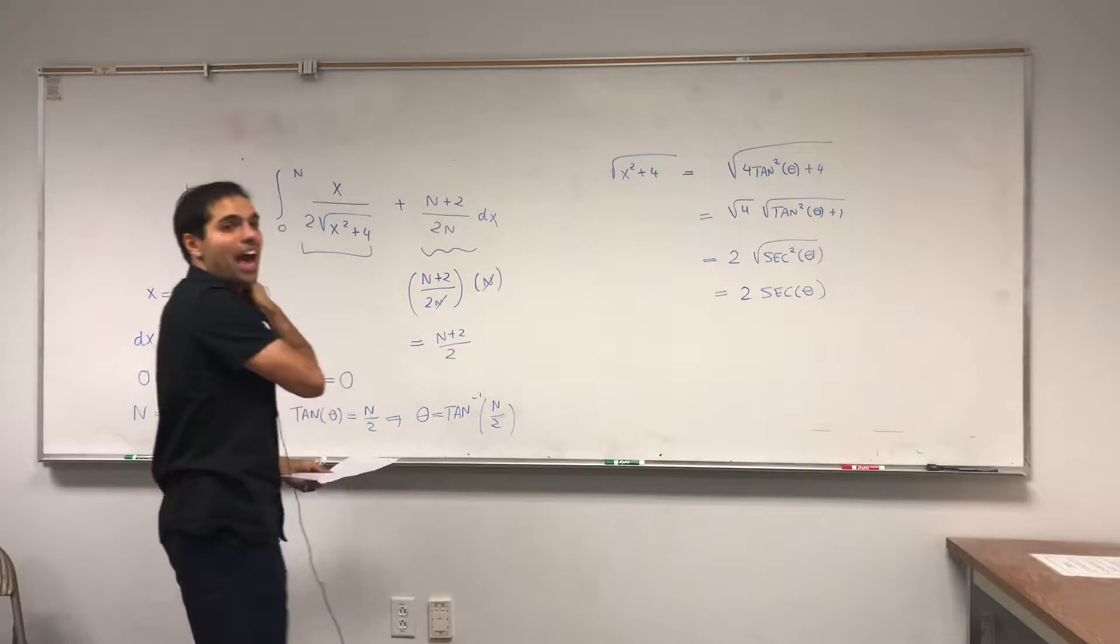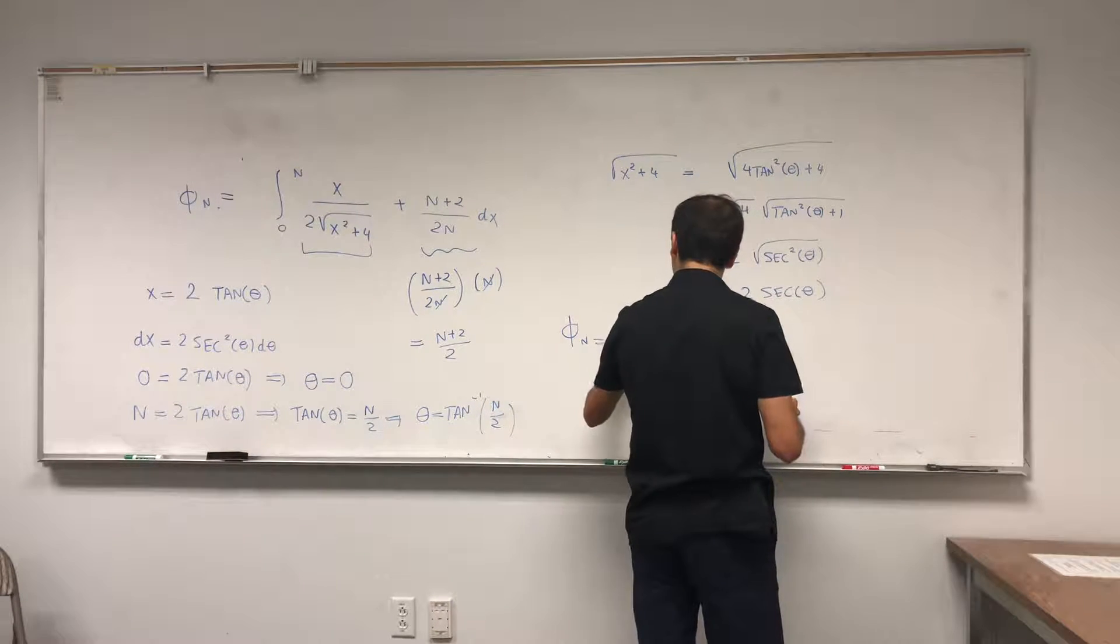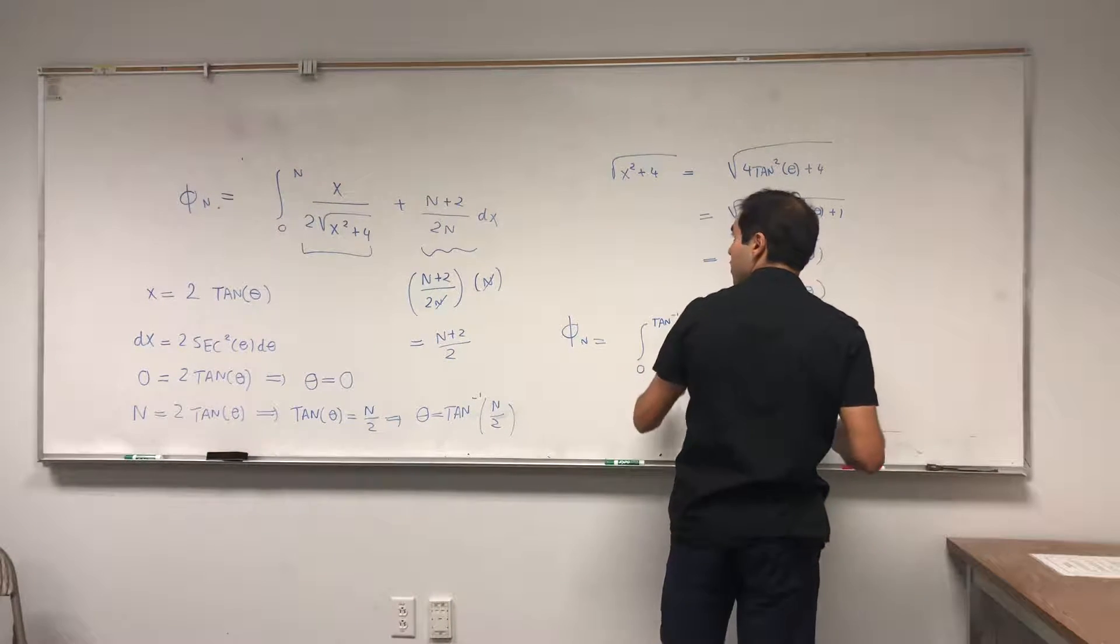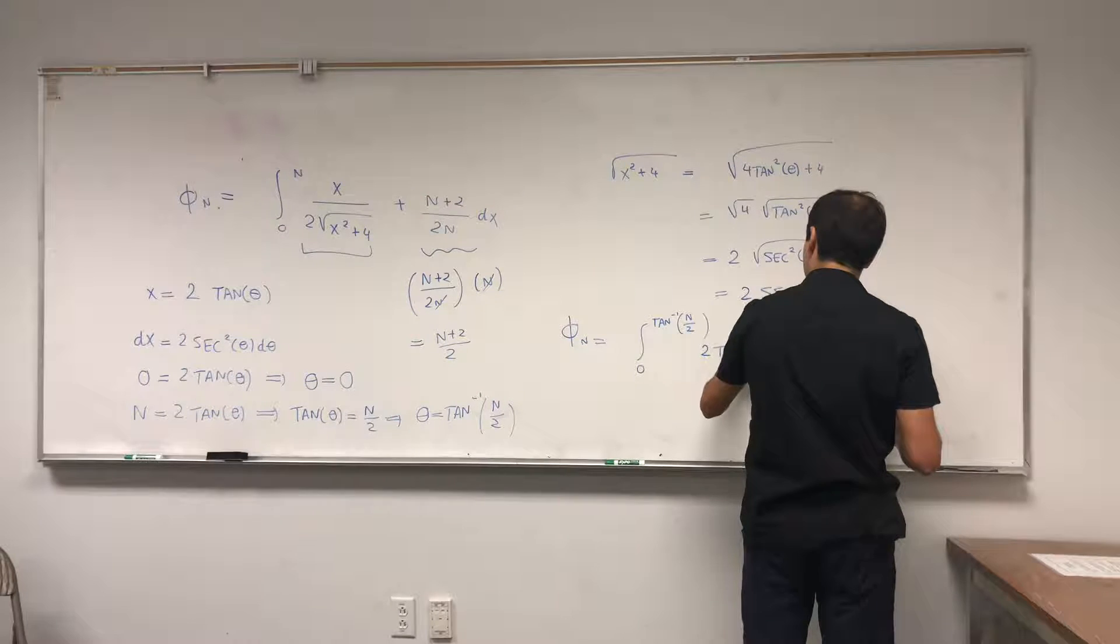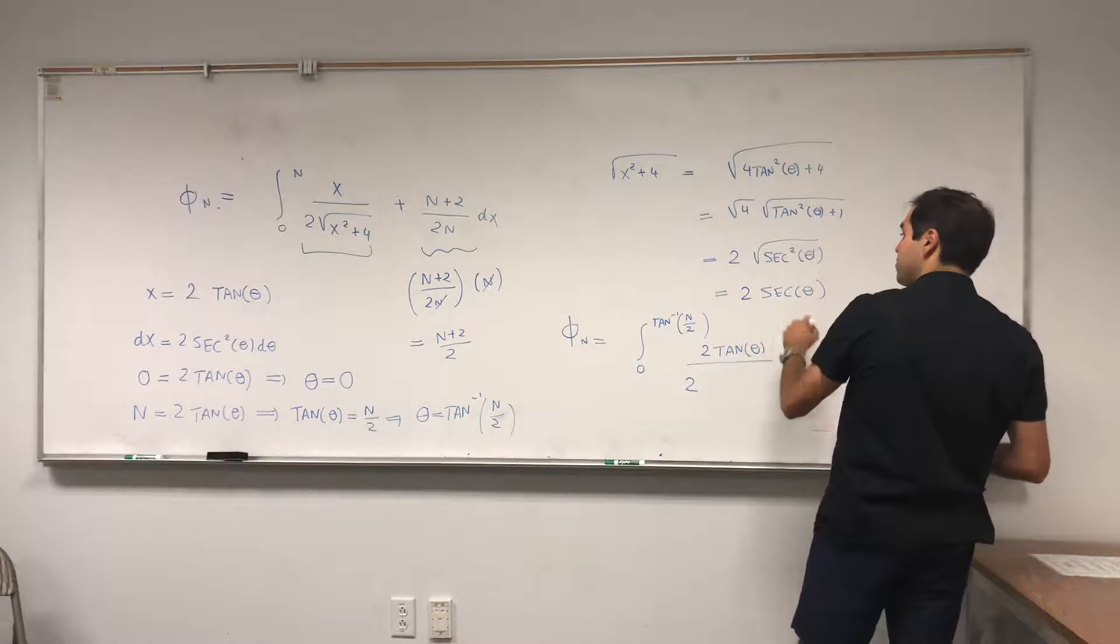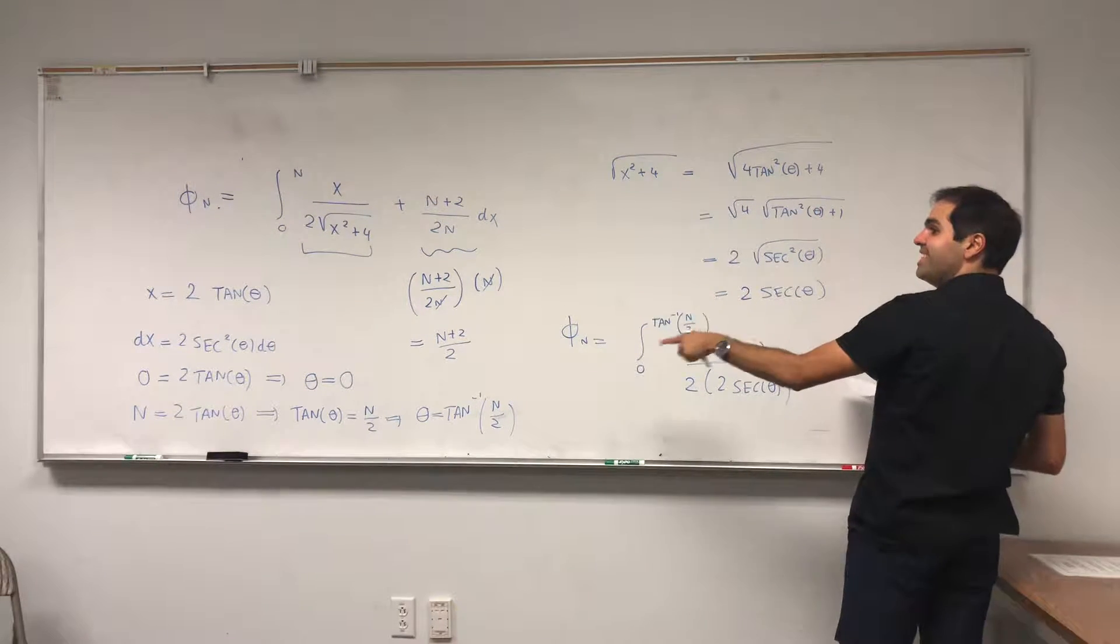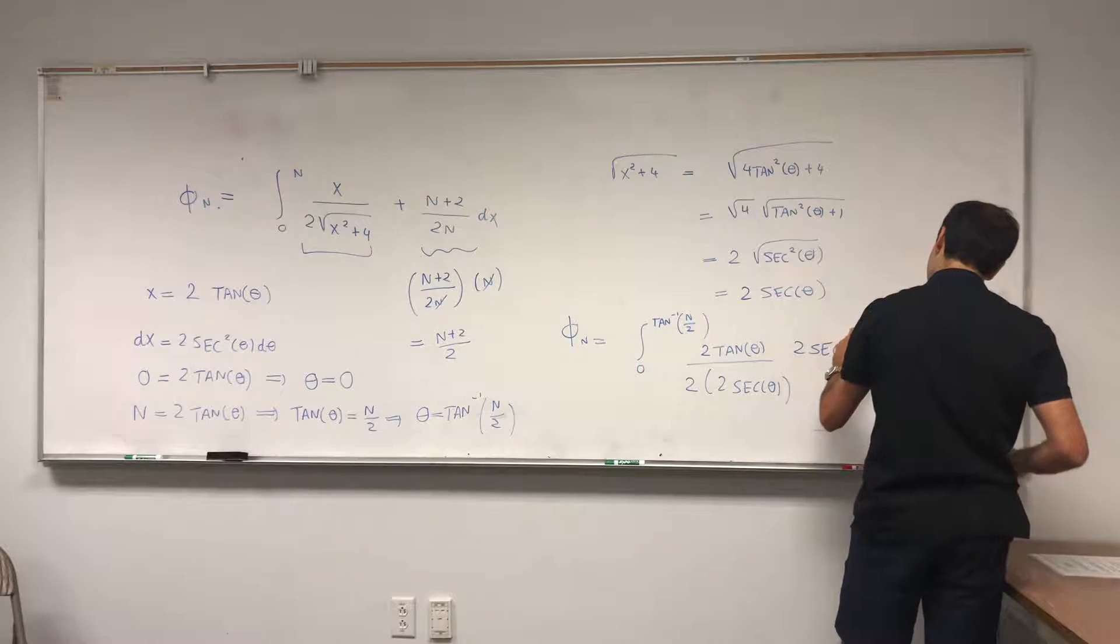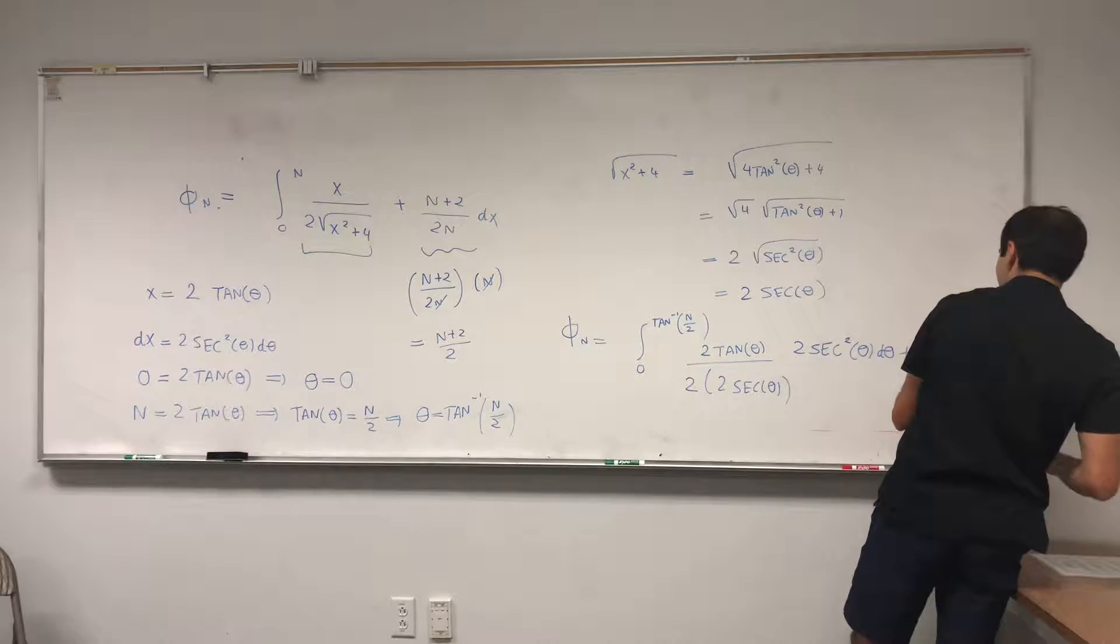All right so what happens to this integral. So phi n equals to the integral from 0 to arc tangent of n over 2. So x is 2 tangent of theta, the denominator is 2 square root of x squared plus 4 which becomes 2 times 2 secant theta. You see it's kind of nice. Then dx becomes 2 secant squared d theta, and remember this junk will carry along all the way, n plus 2 over 2.